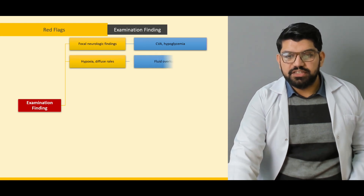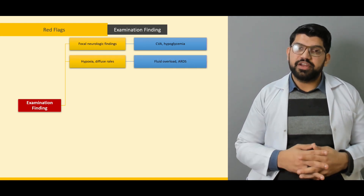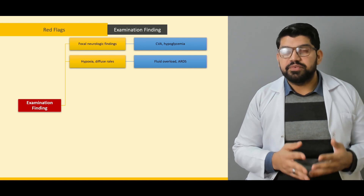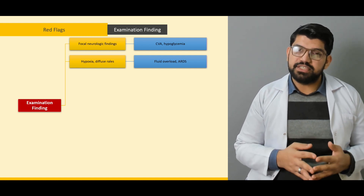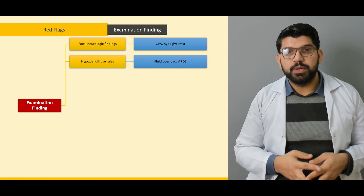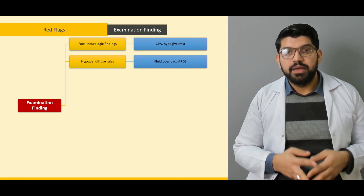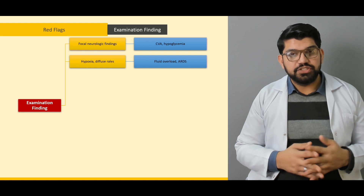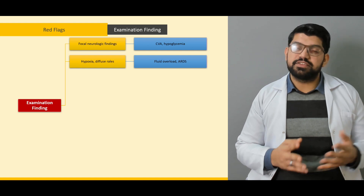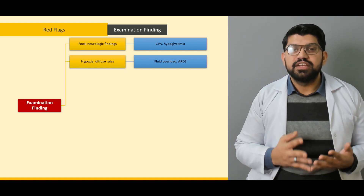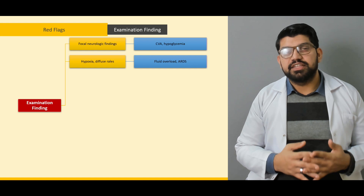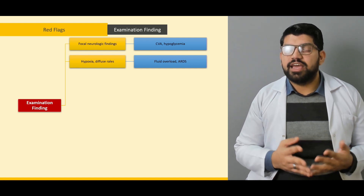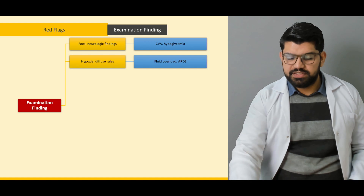Hypoxia, diffuse rales, fluid overload, and ARDS: patients with renal insufficiency due to diabetes can present with fluid overload. Patients with myocardial infarction due to diabetes and other risk factors can present with diffuse crepitations in the chest. Acute respiratory distress syndrome can be a presentation with diabetes.